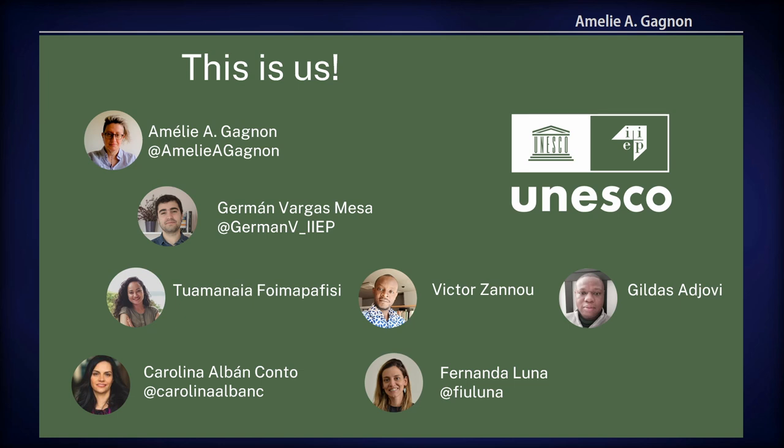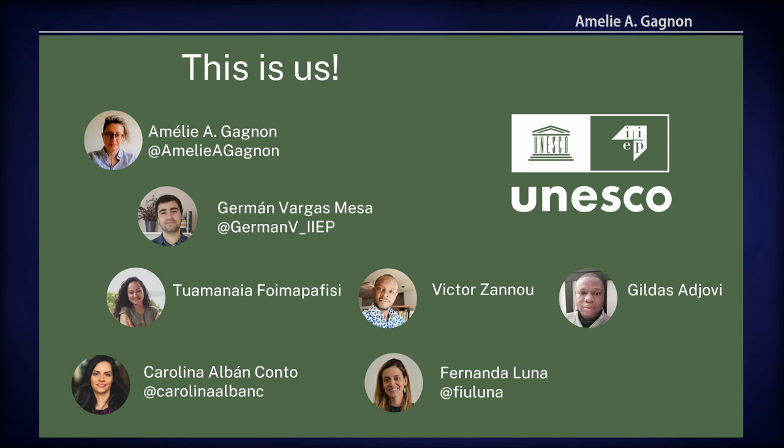The way that we work is that we try to be as collaborative as possible, and we really rely on free open source software, but also on free literature, open literature, and open data, so that everyone can replicate what we do. Microplanning and educational planning started decades ago — the institute was founded in 1963 — and since then we've been working on microplanning and building these education systems with geography.